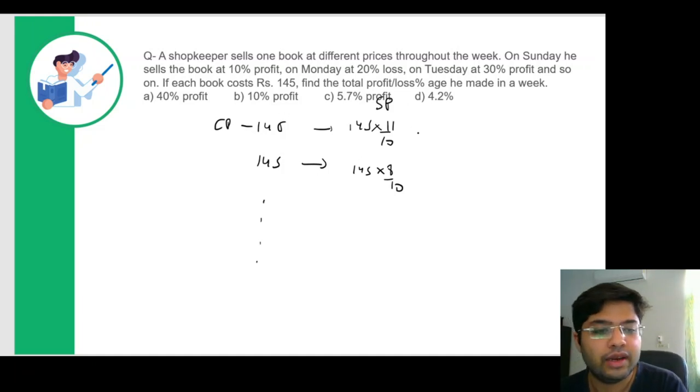So what we'll do is we'll calculate all these values, find the selling price for each day, find the cost price for each day, add them and then calculate the profit. But this is a time consuming process. So what we can do is we can use variables instead to make life easy.